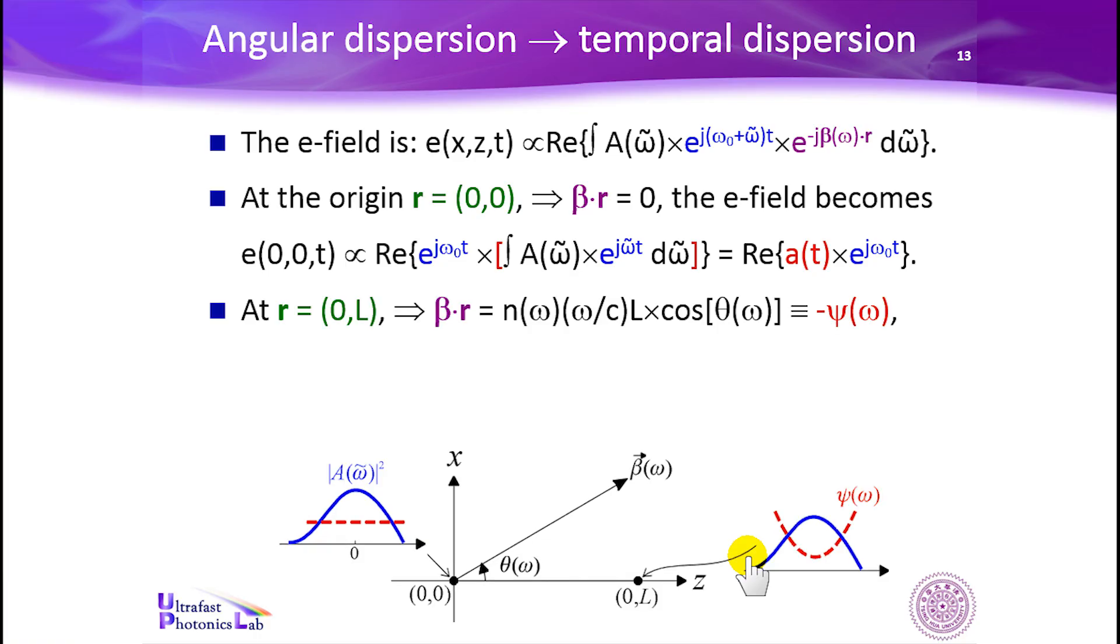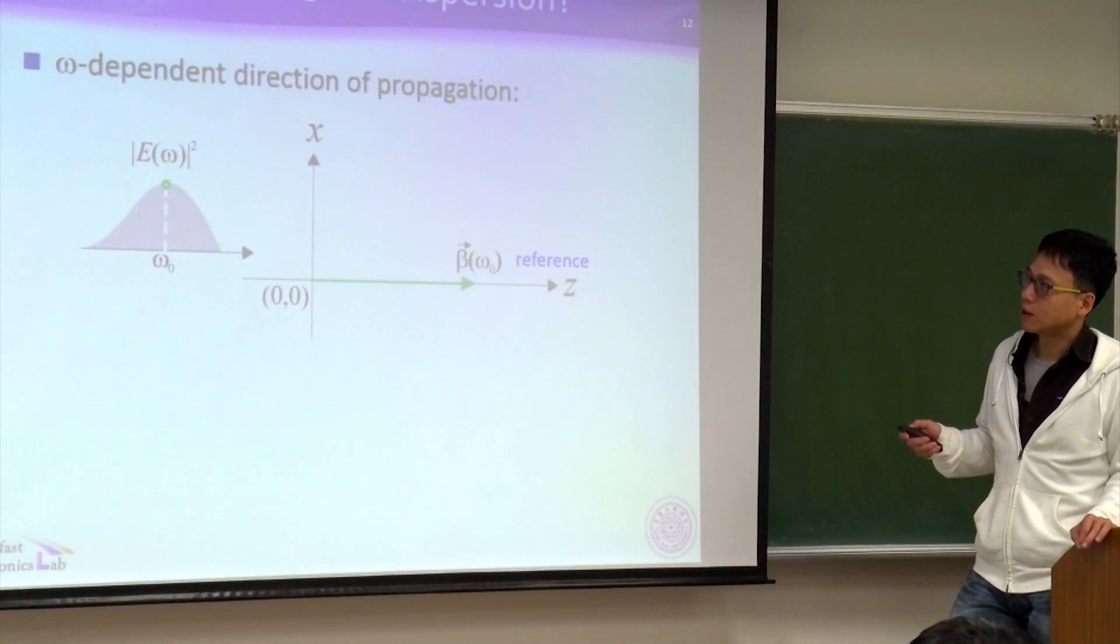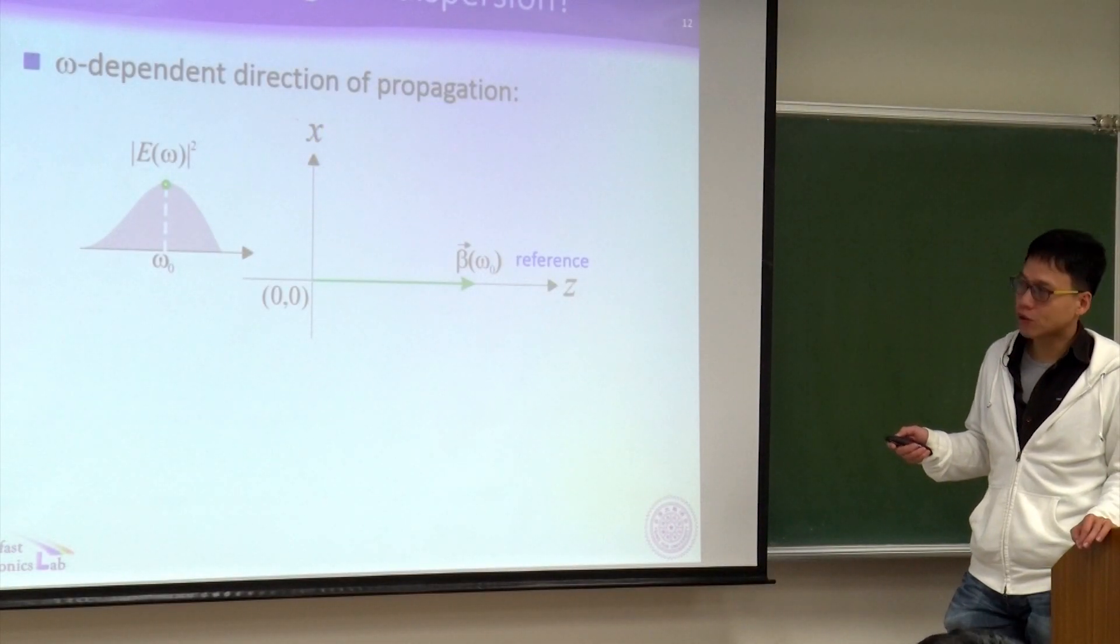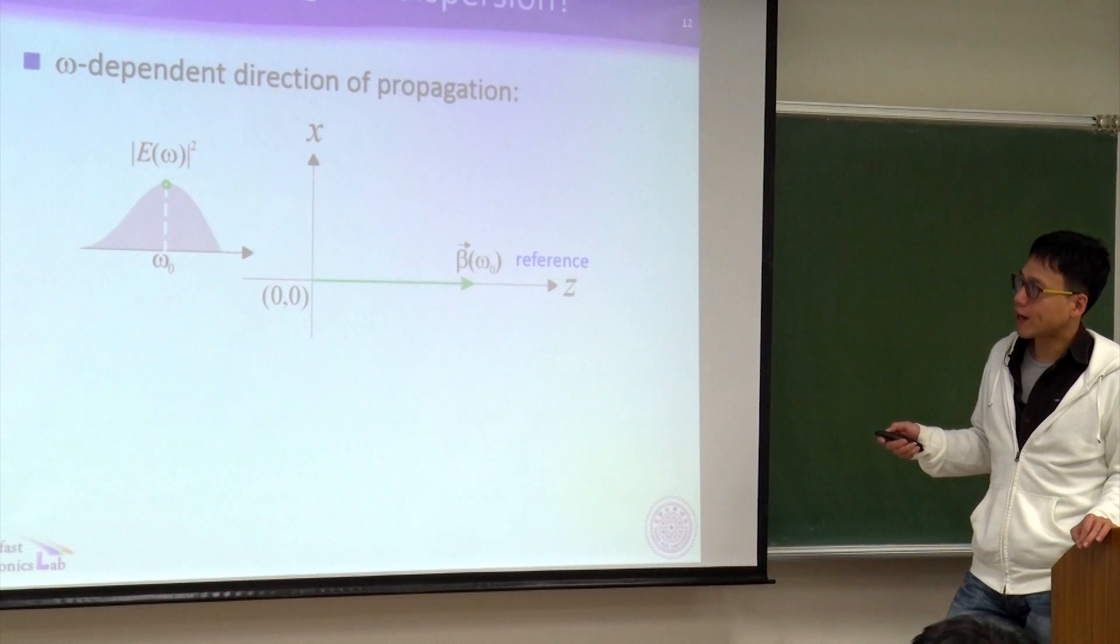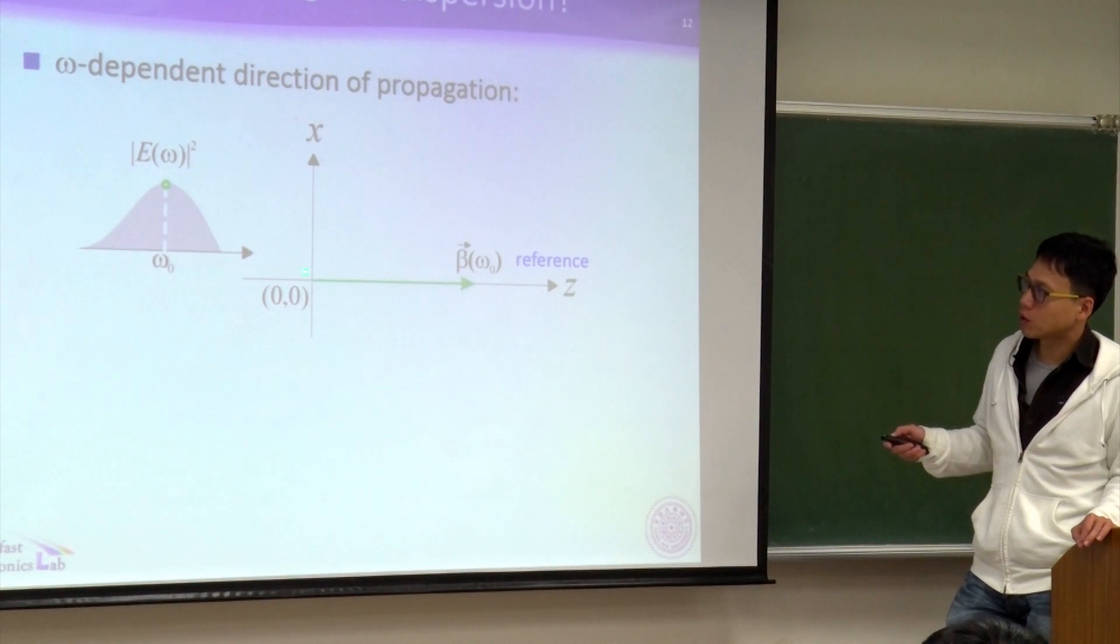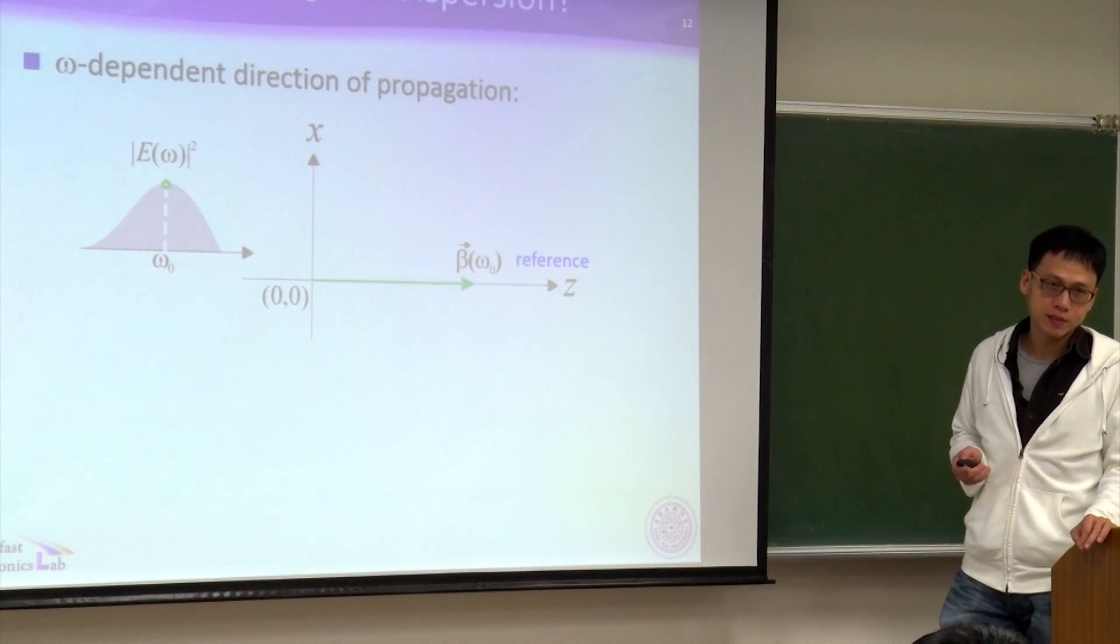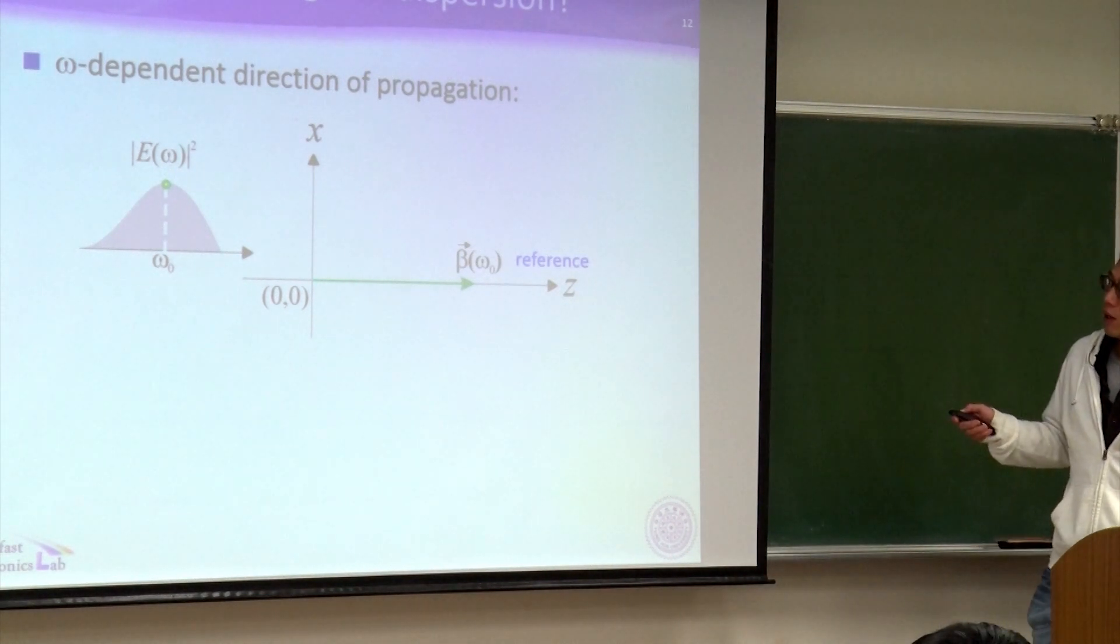Let's look at this figure. You have a broadband signal. The gray one is the power spectrum. The central frequency, say, is omega zero, which is here. And assume at this central frequency, the corresponding wave vector, beta vector, is represented by the green arrow. Say, it is along the direction of z-axis. And this is defined as the reference direction.